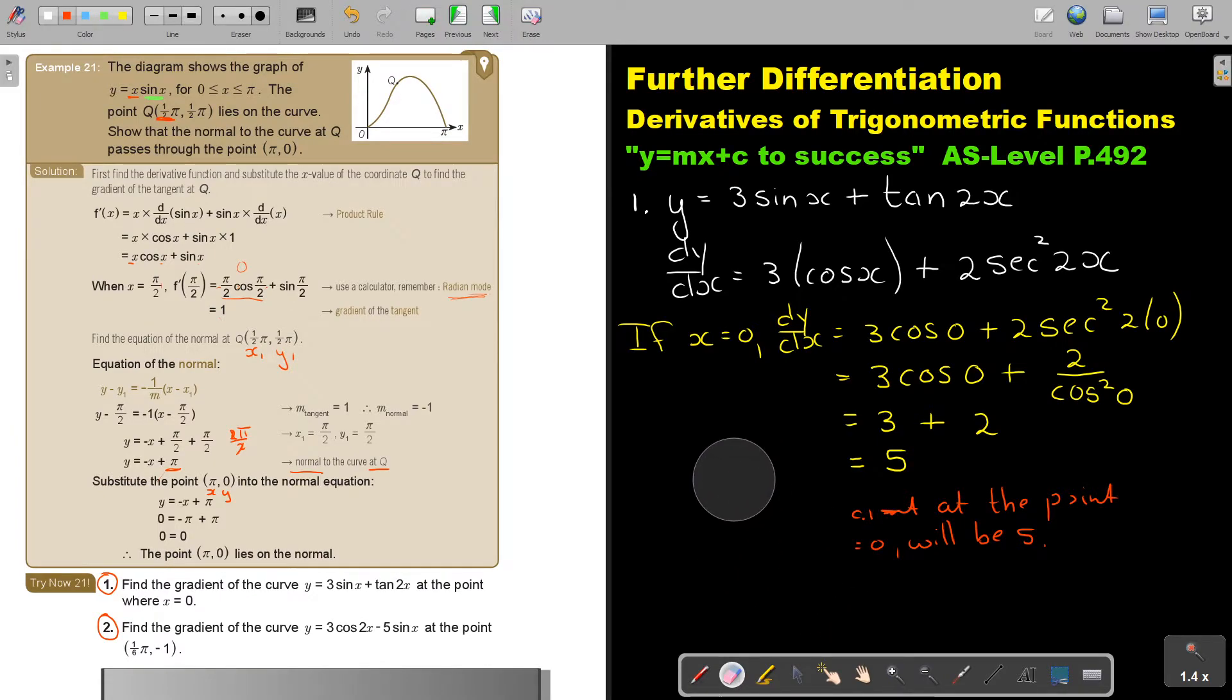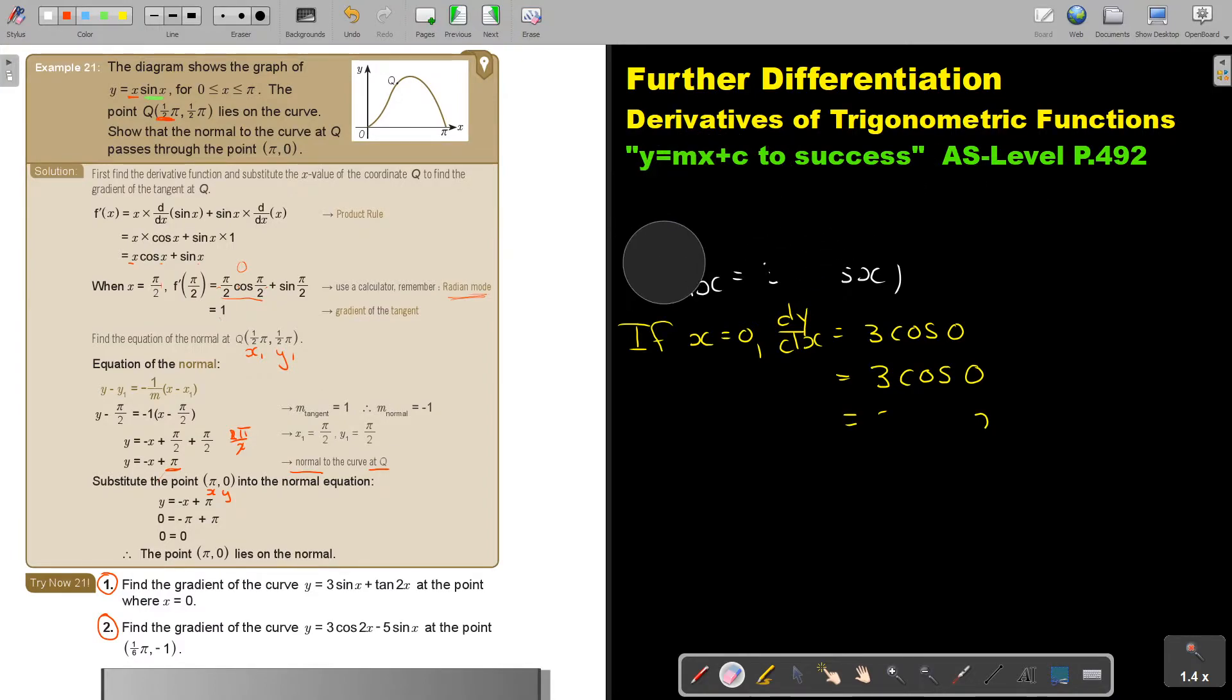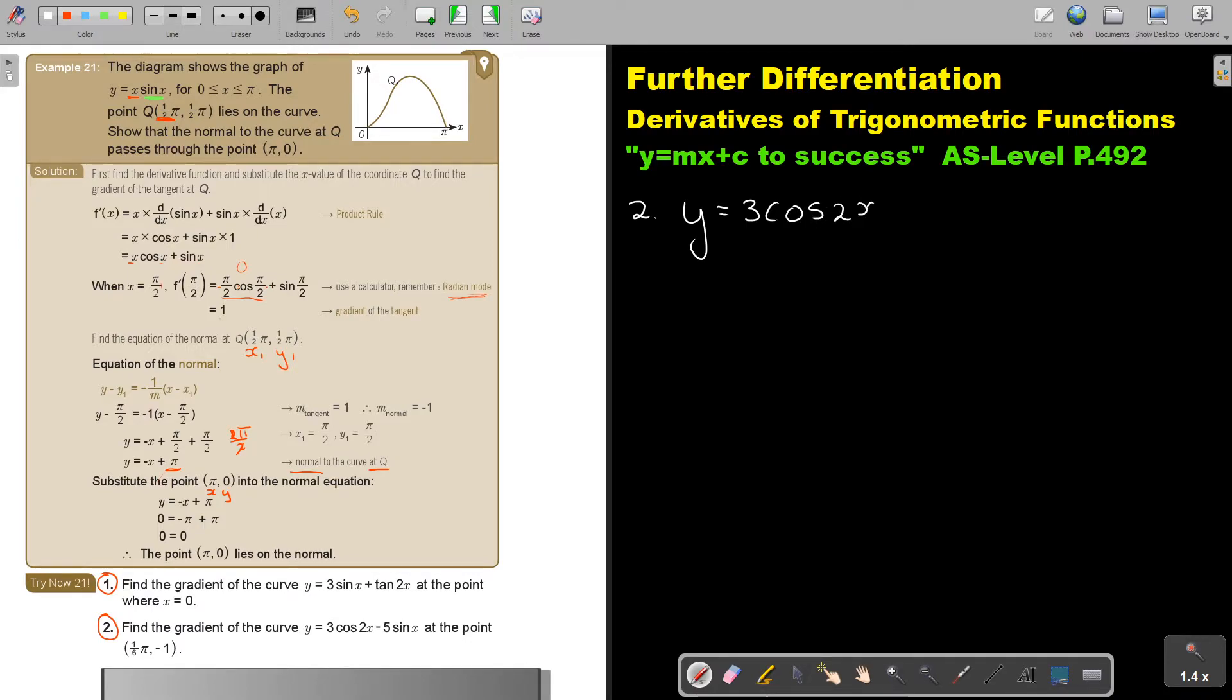Find the gradient of the curve. Let's write it down. y is equal to 3 cos 2x minus 5 sin x at the point, and what is that point? The point is 1 over 6 π and negative 1. Find the gradient. Now if I start to do this one, first, we're going to differentiate.